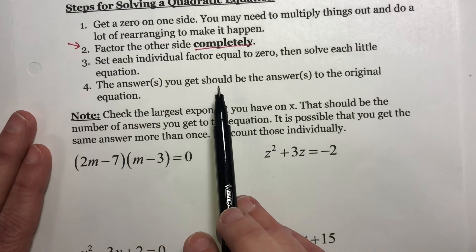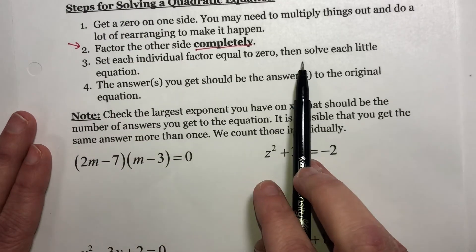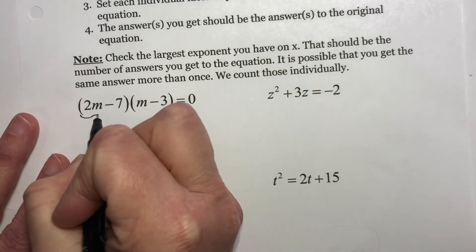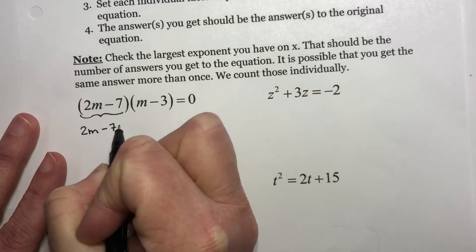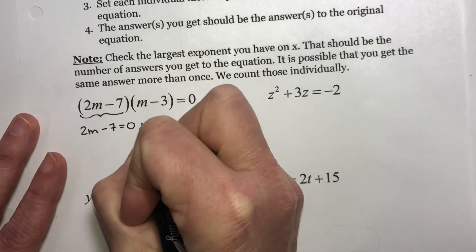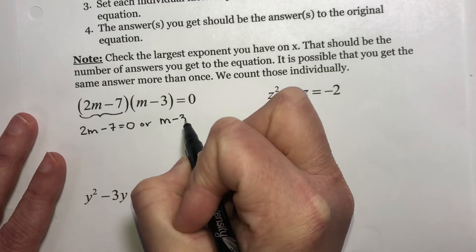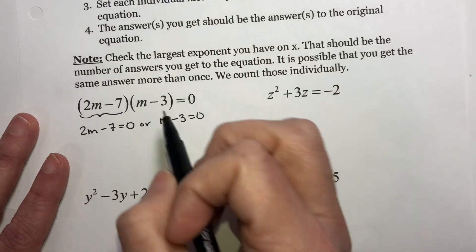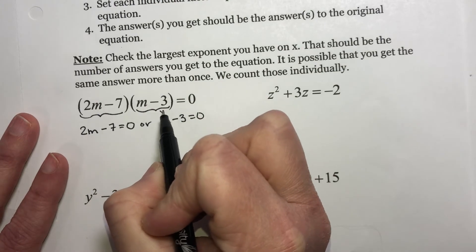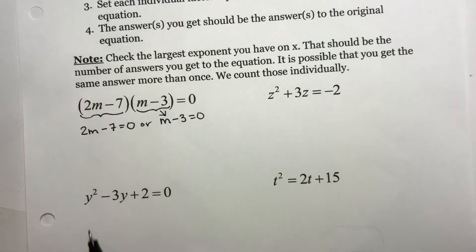Step 3 and 4: Set each individual factor equal to 0. What this means is you're going to take this part and set it equal to 0, and that's going to give me my answer. Or my other answer will come from setting this one equal to 0. Now, what we have here is two things multiplied together, and we said the only way that can happen is if at least one of them is 0.